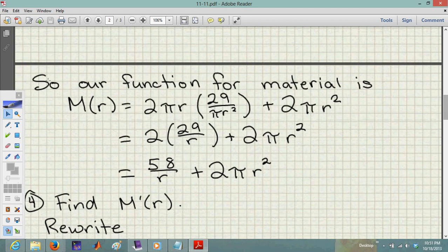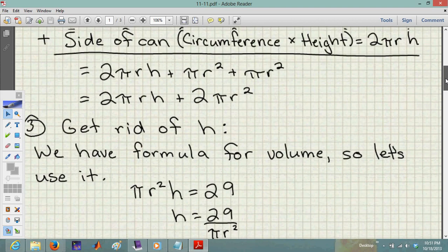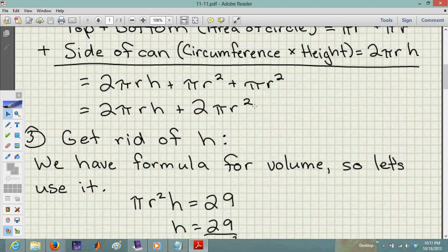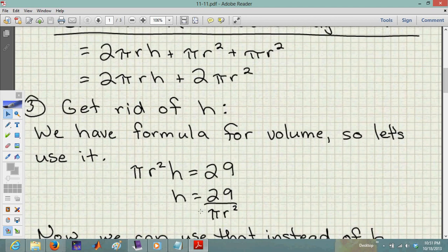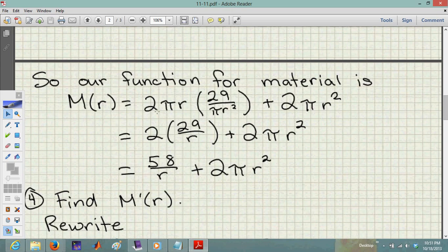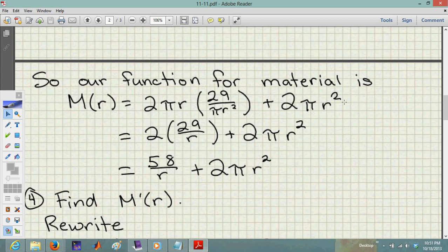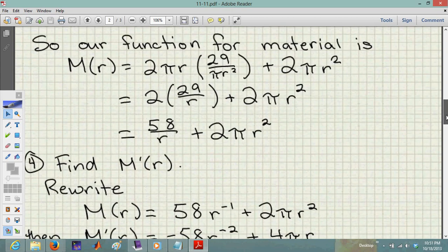So our function for materials is M(r) = 2πr(29/πr²) + 2πr². Plugging in our formula for h gives 2πr(29/πr²) + 2πr². Simplifying by canceling π and r in the denominator gives 2(29)/r + 2πr², which equals 58/r + 2πr². That's our material function in terms of the radius.